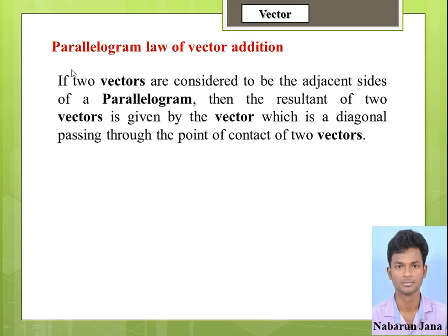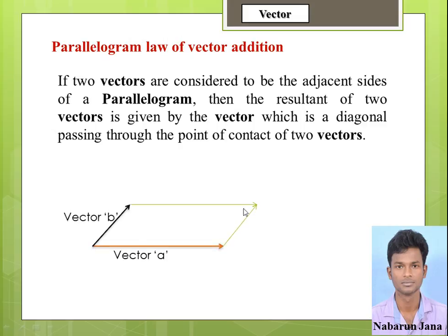Now I am going to discuss the Parallelogram Law of Vector Addition. The statement is: if two vectors are considered to be the adjacent sides of a parallelogram, then the resultant of the two vectors is given by the vector which is a diagonal passing through the point of contact of the two vectors. In the diagram, vector A and vector B are represented by the adjacent sides, and the resultant vector lies along the diagonal of the parallelogram.